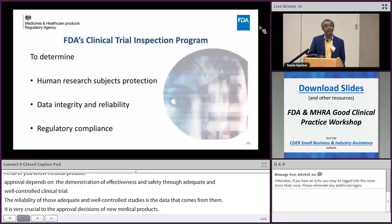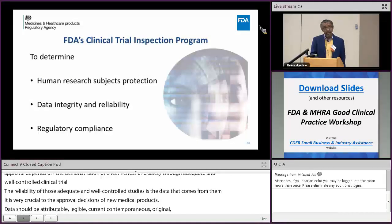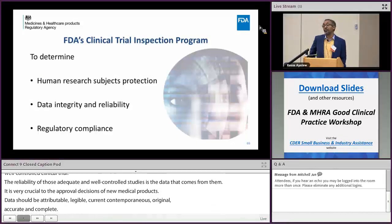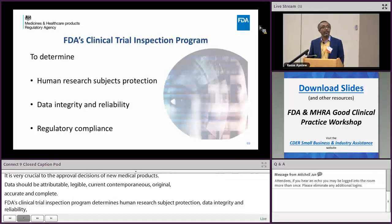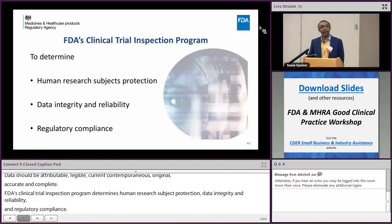The FDA clinical trial inspection program determines the adequacy of human subject protection during clinical trials, as well as the reliability and integrity of data in support of marketing applications that come to the agency for approval. We look into the regulatory compliance during the clinical study — whether a company, sponsor, applicant, or all stakeholders comply with the regulatory requirements set by FDA.